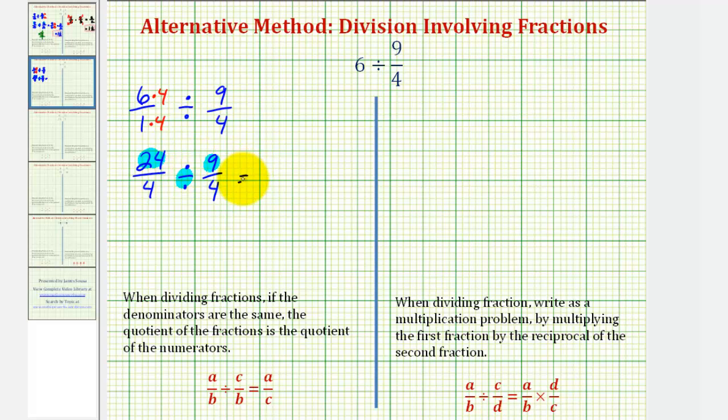Well, 24 divided by 9 would just be 24 ninths. And this does simplify because both 24 and 9 share a common factor of 3, which means this simplifies to 8 thirds, which is a simplified fraction.